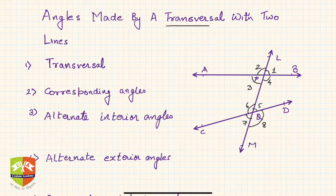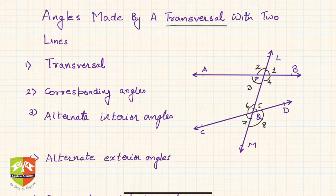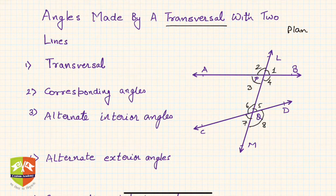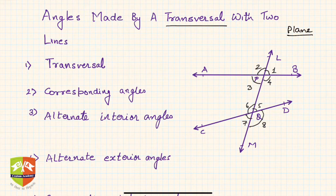First of all, we need to understand what is a transversal and what are the properties related to it. Let's say there are two lines, a and b, on the same plane. We are talking about two lines in the same plane — there could be lines in two different planes as well, but we are not going to deal with them. We are going to deal only with the case where the two lines are on the same plane, also called coplanar lines.